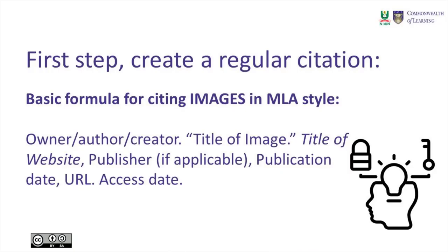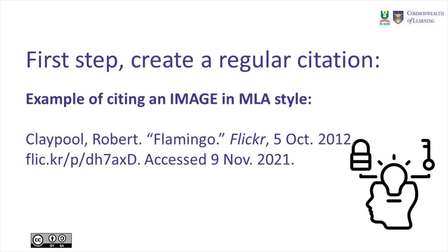The basic formula for citing images in MLA style, as you can see on your screen, includes: name of owner, author, or creator; title of the image; title of the website; publisher if applicable; publication date; URL; and access date. For example, citing an image from Flickr — you can see the author's name Claypool, Robert, and so on — including the date it was accessed and the link to the image itself.